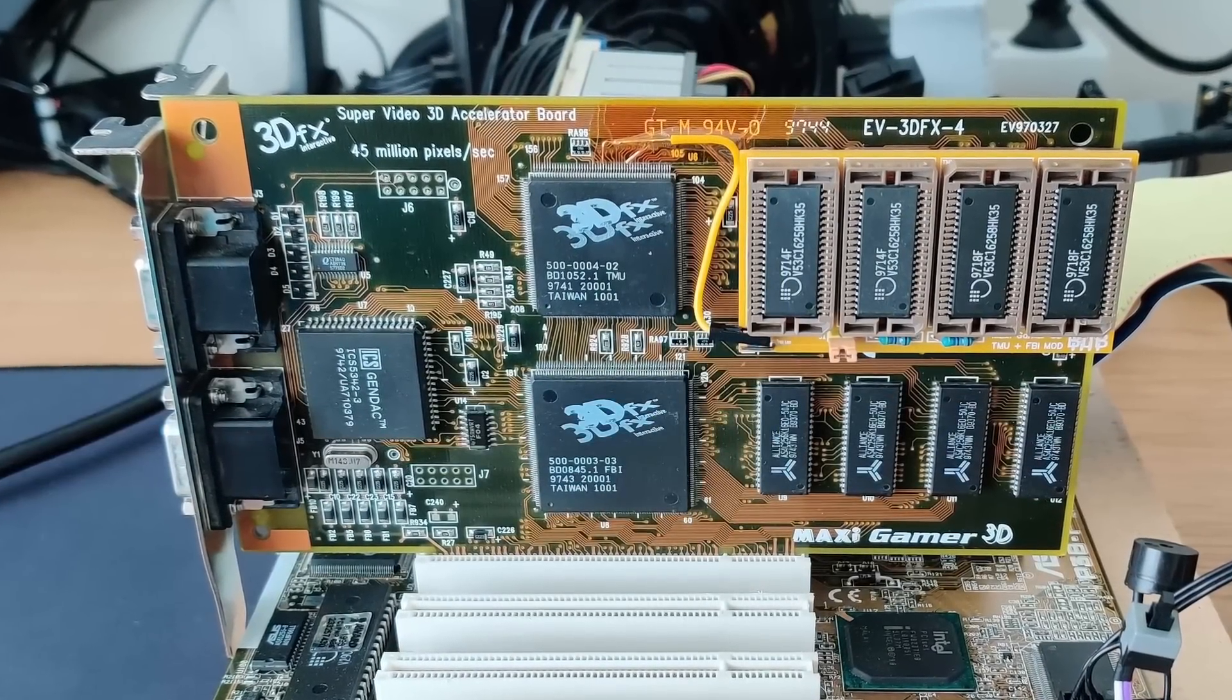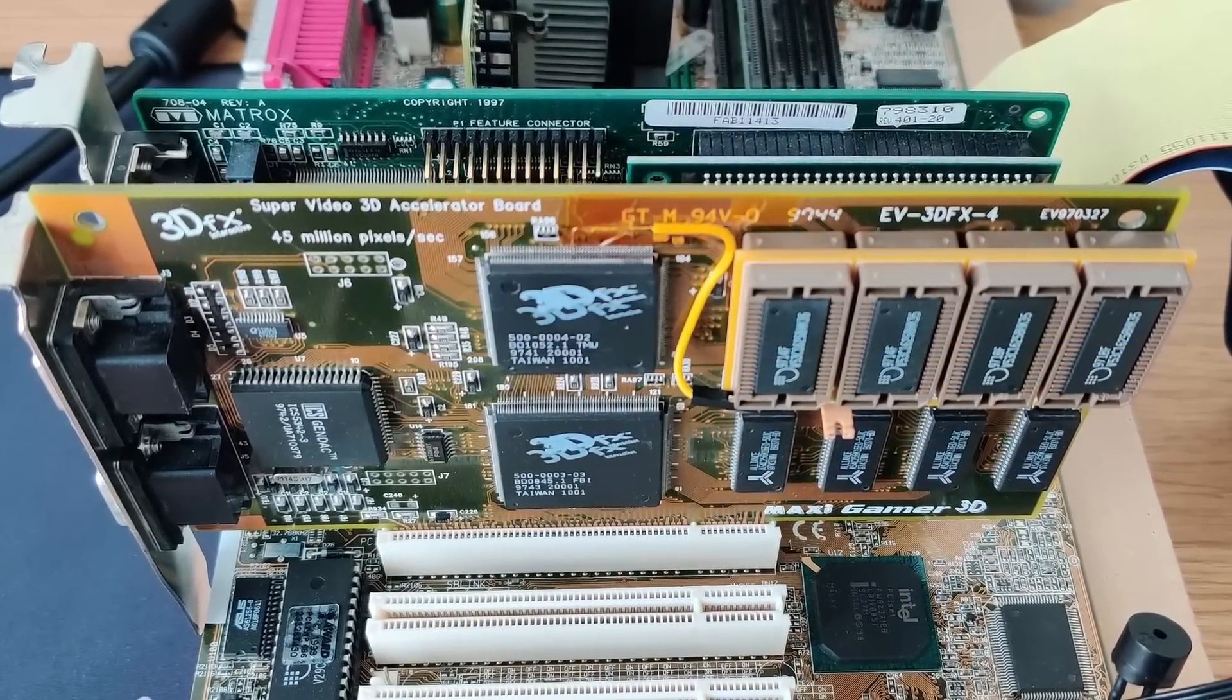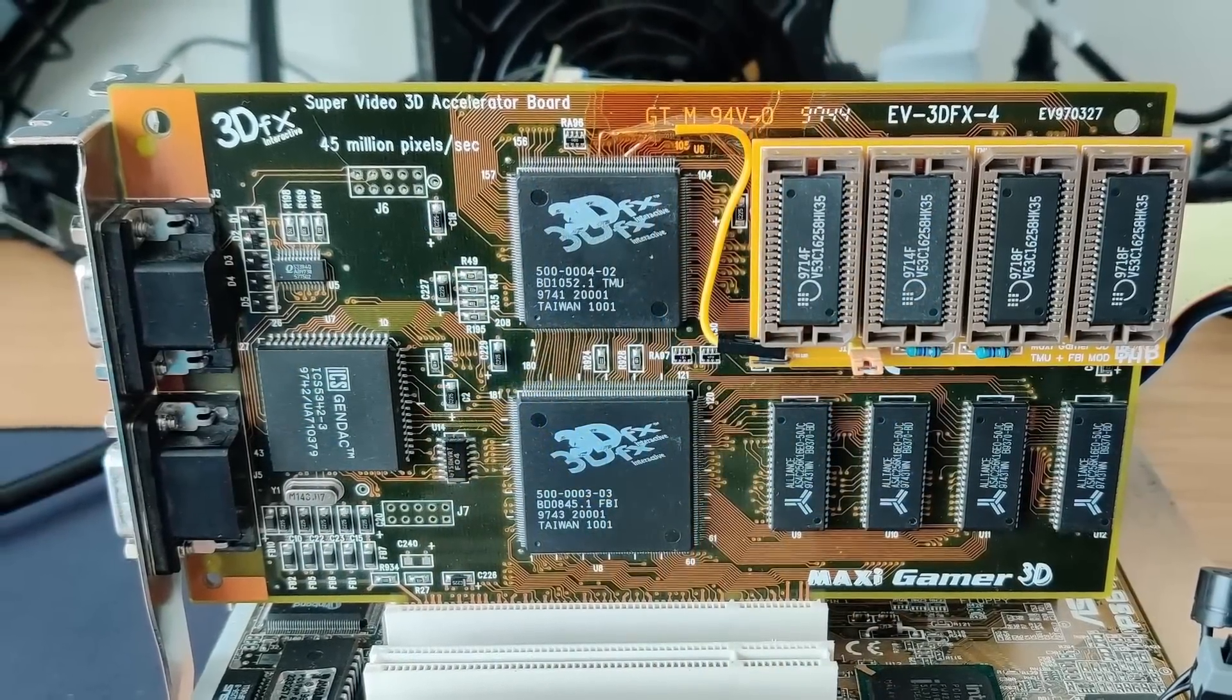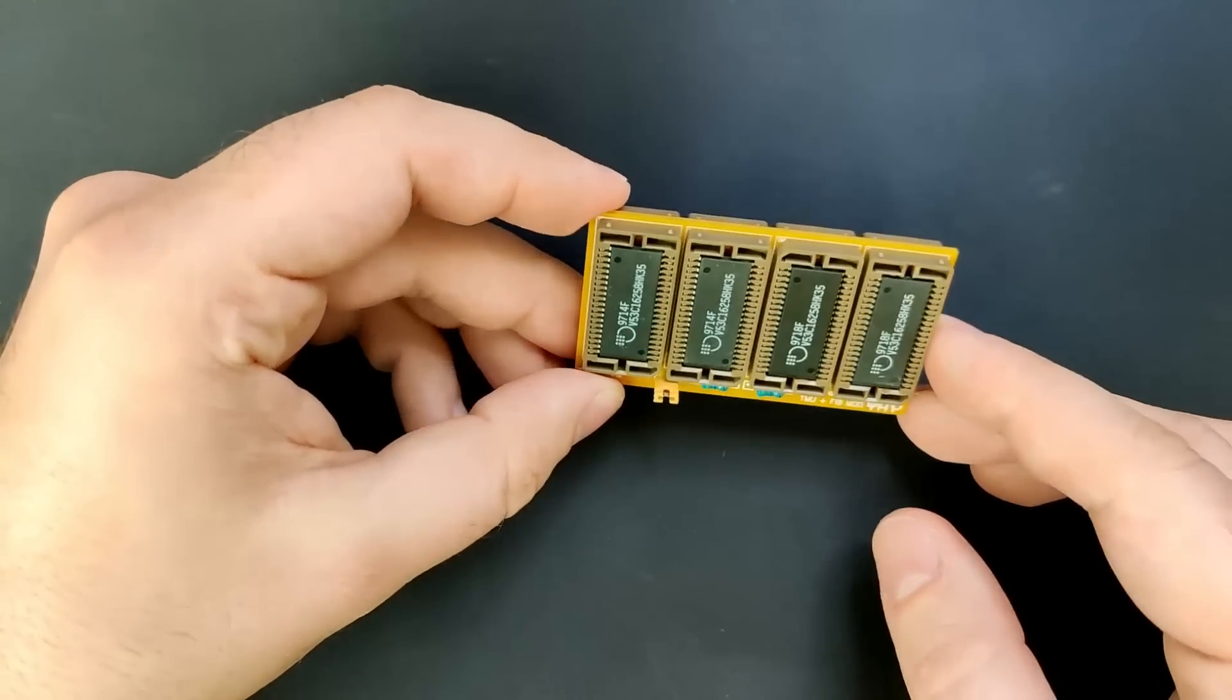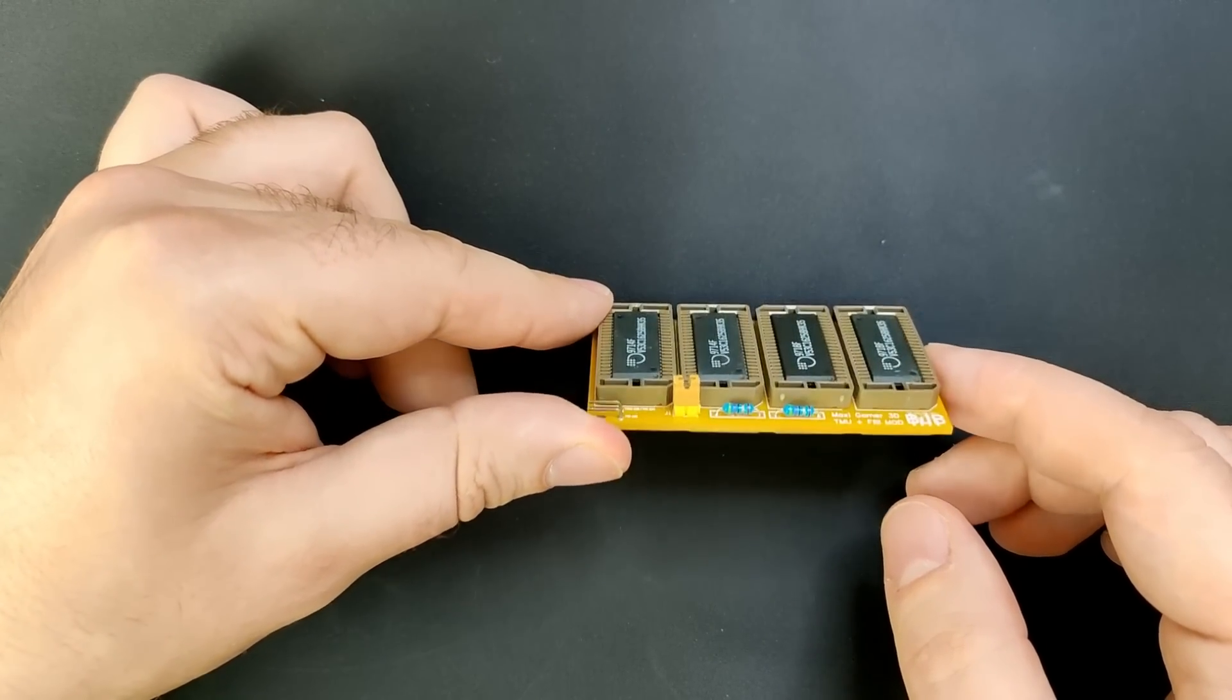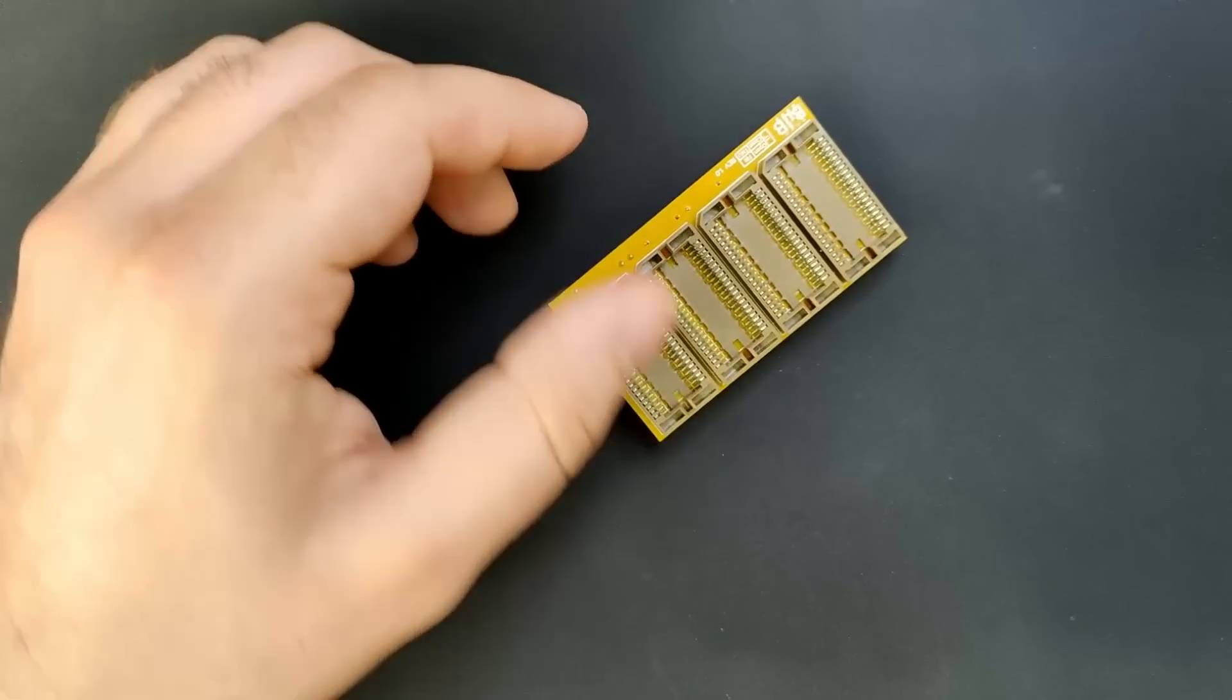And there you have it, part 1 of upgrading the 3DFX Voodoo card with more memory. In part 2 we will prepare the memory board for the FBI chip and increase the video memory from 2 to 4MB. Then we can check which chip benefits the most from the extra memory. Will we be able to render scenes at a resolution of 800x600? Were most of the companies correct in shipping most Voodoo cards with only 4MB of memory? If you don't want to miss the answers to those questions then I suggest you subscribe to my channel. Also, don't forget to like this video if you enjoyed the content. Let me know in the comments what games I should test or what benchmarks you would like to see.